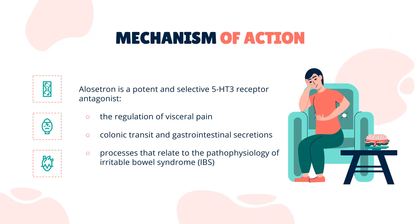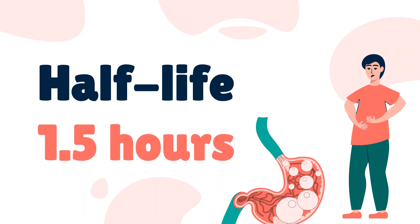Mechanism of Action: Alosetron is a potent and selective 5-HT3 receptor antagonist. 5-HT3 receptors are non-selective cation channels that are extensively distributed on enteric neurons in the human gastrointestinal tract, as well as other peripheral and central locations. Activation of these channels and the resulting neuronal depolarization affect the regulation of visceral pain, colonic transit, and gastrointestinal secretions — processes that relate to the pathophysiology of irritable bowel syndrome (IBS). 5-HT3 receptor antagonists such as alosetron inhibit activation of non-selective cation channels, which results in the modulation of serotonin-sensitive GI motor and sensory processes. Half-life: 1.5 hours.